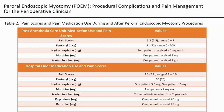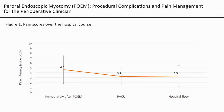During their hospital course, some patients required several classes of pain medications, including opioids, acetaminophen, and non-steroidal anti-inflammatory drugs. Pain scores over the hospital stay demonstrated a decline in pain severity that was in the mild-to-moderate range throughout in most patients.